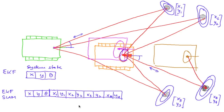What becomes immediately clear is that our state vector no longer has constant size. For each new landmark we observe that we haven't observed before, our state vector will grow by two elements.